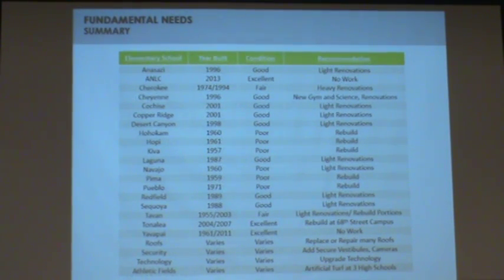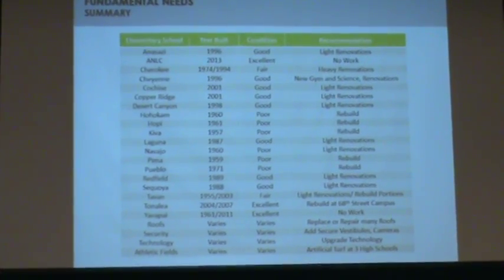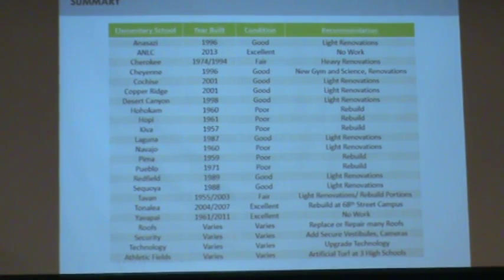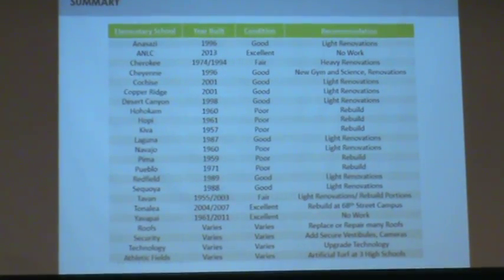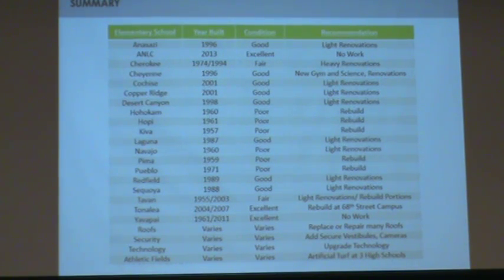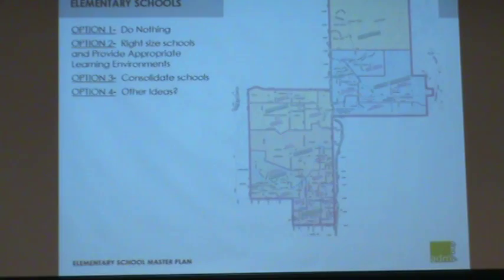In summary, with all schools listed by year built, condition assessed, and recommendation: two schools require no work — Yavapai and ANLC. One school needs heavy renovations. The majority — ten schools — need light renovation or possible building additions. And there are six sites that could be potential rebuilds, should the community, the district, and the board decide that's the right thing to do.